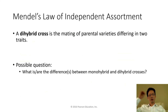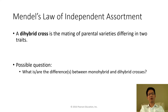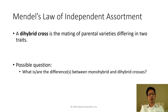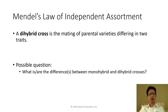Remember we talked about independent assortment in meiosis. Let me give you five seconds to think about which phase. Time's up — independent assortment in meiosis occurs in metaphase one.